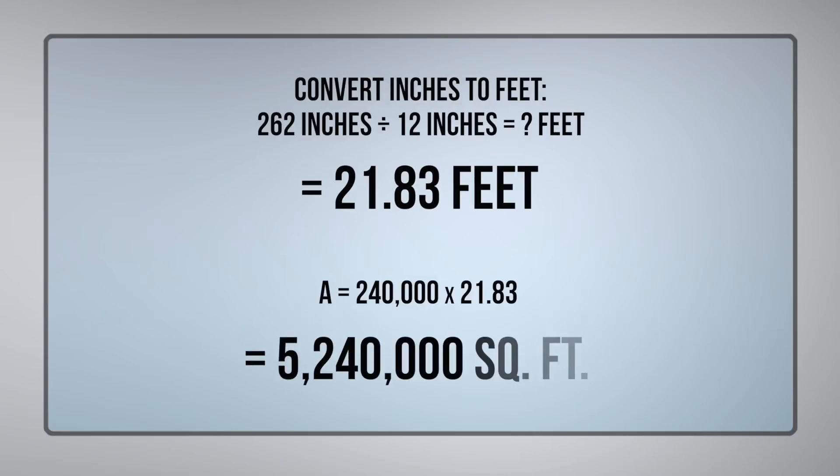Now we can multiply 21.83 feet by 240,000 feet, which totals 5,240,000 square feet of tissue on each parent roll. The paper is then made into rolls of bath tissue. Each roll is four inches wide and contains 187.5 lineal feet of paper. How many tissue rolls can be made from one parent roll of paper?